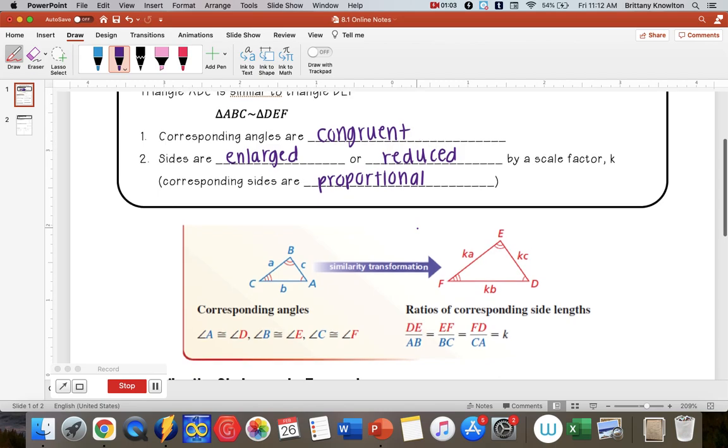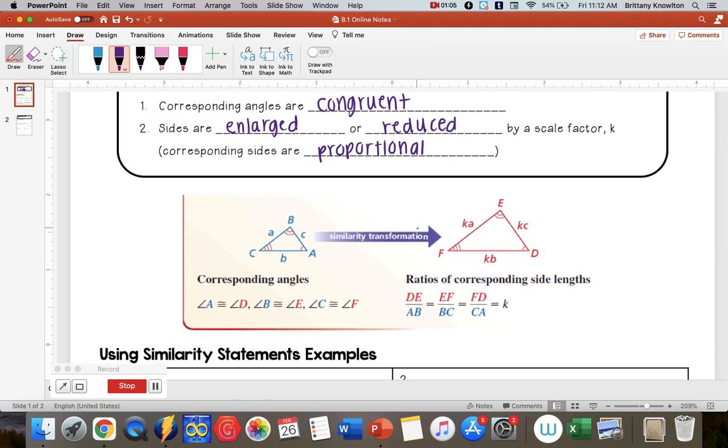And so to illustrate that, we have this diagram down here. So I have my triangle ABC. And through a similarity transformation, which we learned about last semester in Chapter 4, I am going to have this other similar triangle.